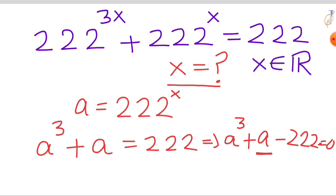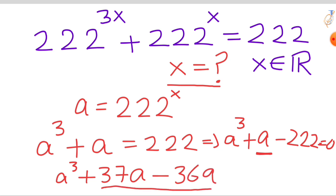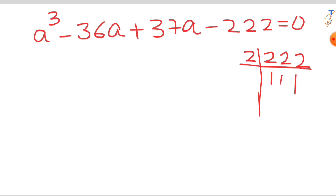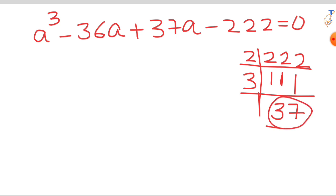We can write the 'a' term as 37a minus 36a, so after subtracting we still have a, giving us a cubed plus 37a minus 36a minus 222 equals 0. Now let's find the factors of 222: 222 divided by 2 gives 111, divided by 3 gives 37, and 37 is a prime number. So 222 factors as 2 times 3 times 37, which equals 6 times 37.